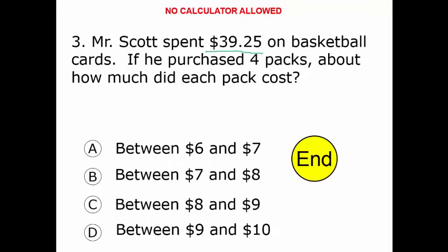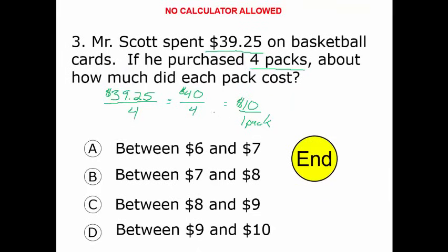Scott spent $39.25 on basketball cards. He purchased 4 packs. This is a unit rate problem. If we write this as a fraction, $39.25 per 4 packages — how much did he spend per pack? Was it between 6 and 7, 7 and 8, 8 and 9, or 9 and 10? The fastest way to get to this is to use estimation. That's close to $40 for 4 packs, which I could quickly deduce is $10 per one pack. It's hard to divide $39.25 by 4 in your head, but $40 divided by 4 is easy. So it's about $10 a pack, a little bit less.